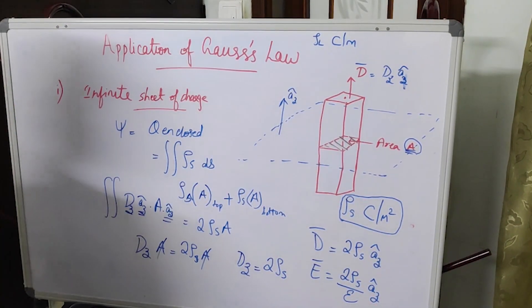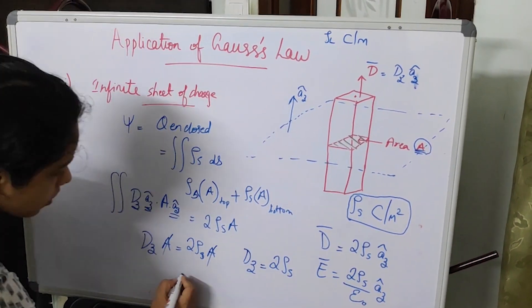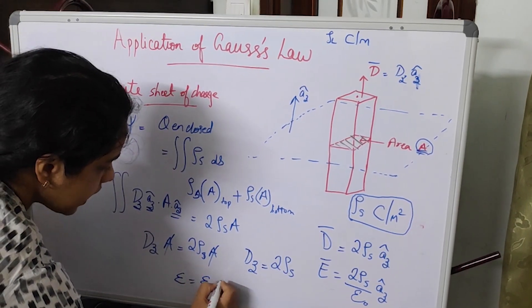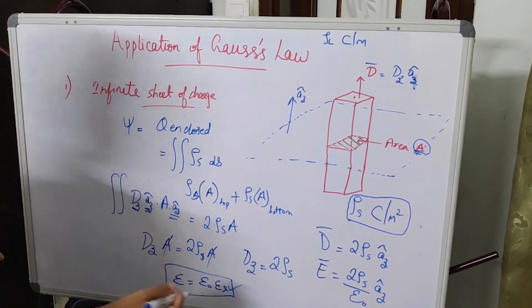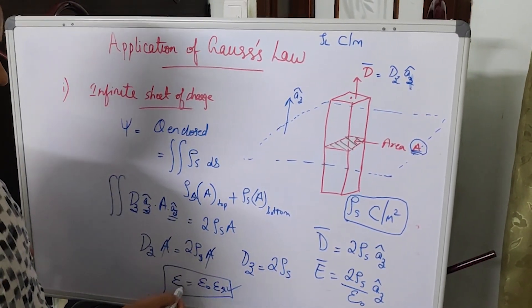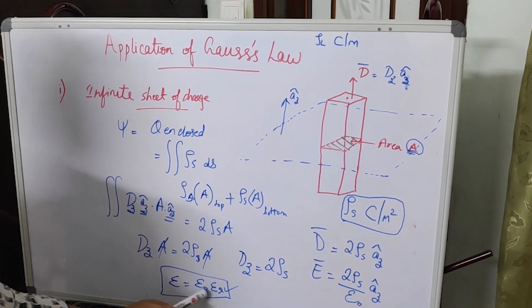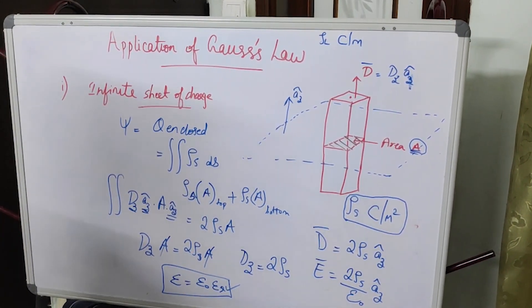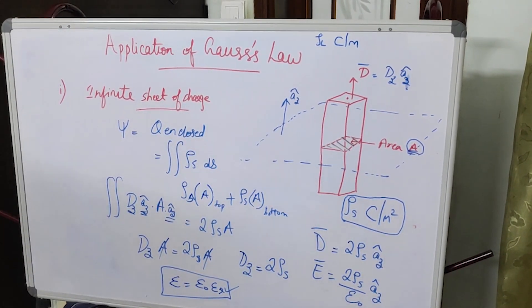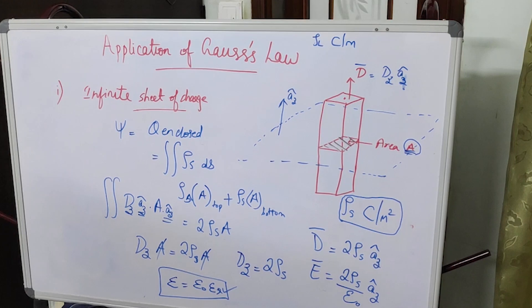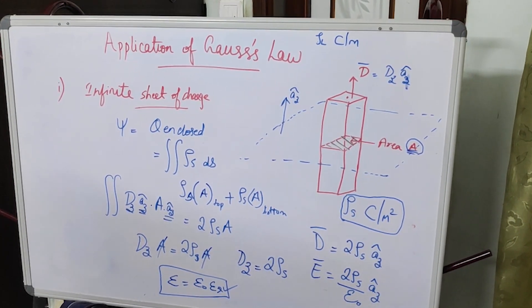Here ε is the permittivity. In free space, ε = ε₀. In general, ε = ε₀ · ε_R, where ε_R is the relative permittivity; in free space ε_R = 1. This is how we calculate the electric field intensity and flux density at a point due to an infinite sheet of charge with charge density ρ_S coulombs per meter squared.